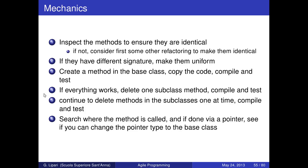The sequence of steps: first, inspect the methods to ensure they are identical. If not, consider other refactoring first, for example to make their signatures uniform — compile and test. Once they have the same name, create the method in the base class, copy the code, compile and test. If everything works, delete one subclass method, compile and test. If everything still works, delete the other subclass method, compile and test. Continue until you've removed all common methods from all subclasses. Also search where the method is called — if done by a pointer, see if you can change the pointer type to the base class to generalize even more.